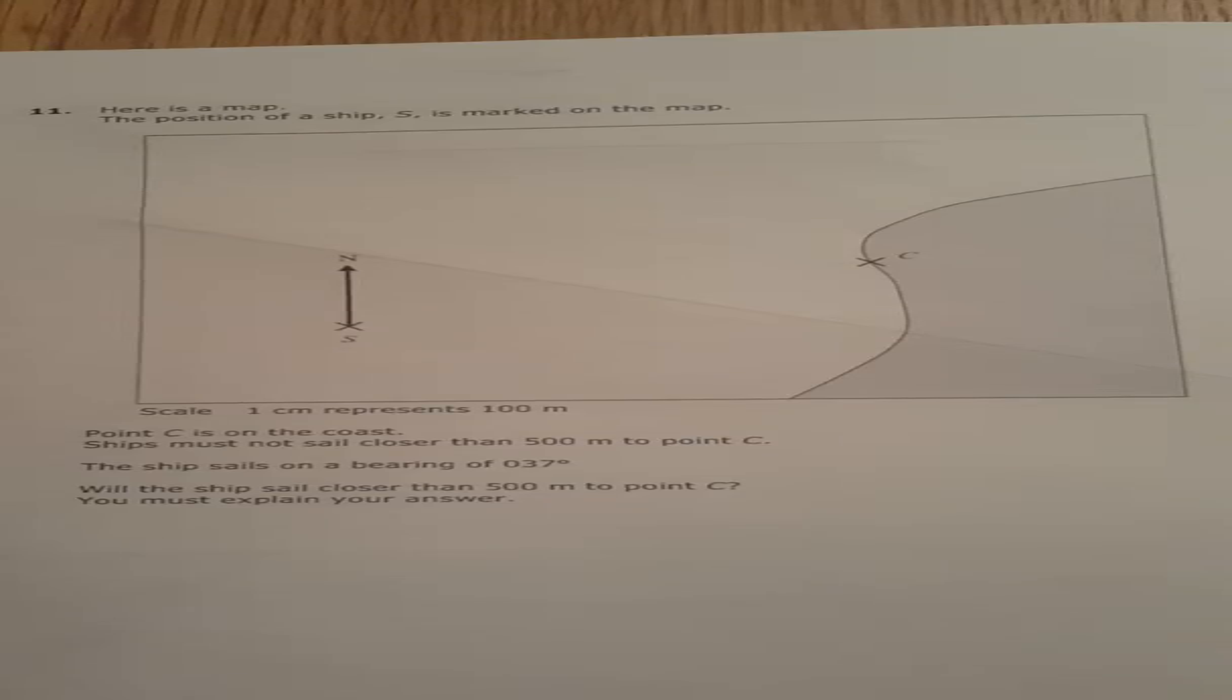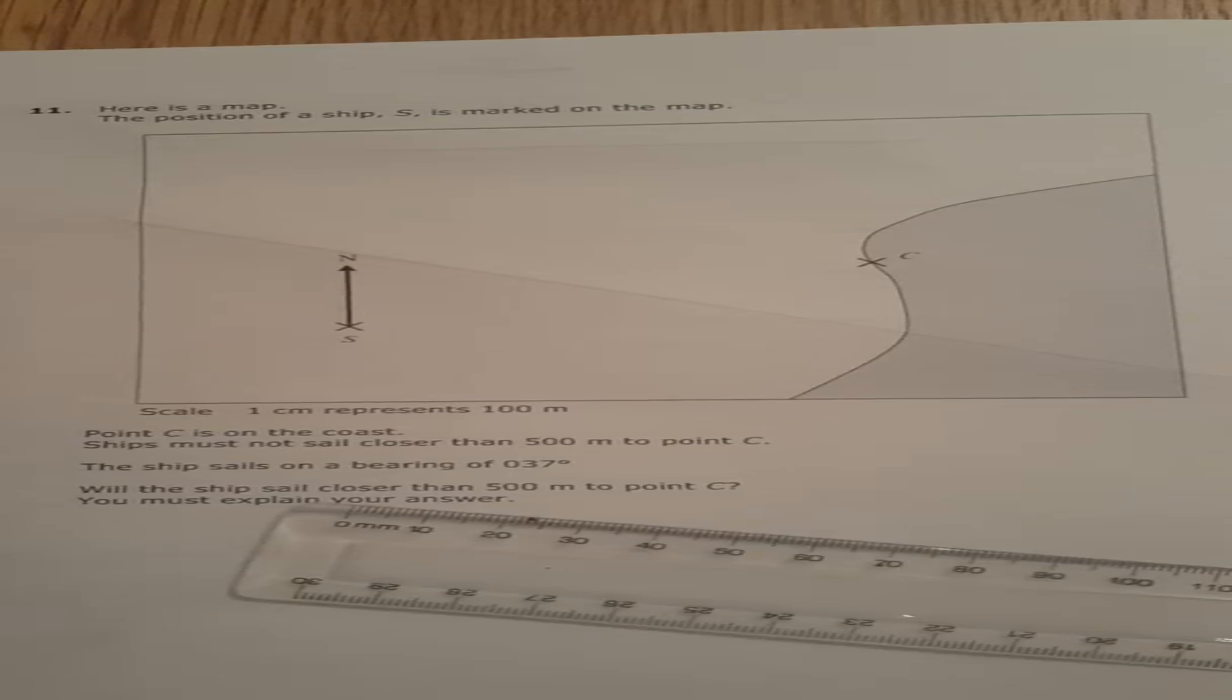We've got to construct these barriers basically, so I'll do the first one. It's saying 500 meters, and 100 meters is a centimeter, so that means we need five centimeters.